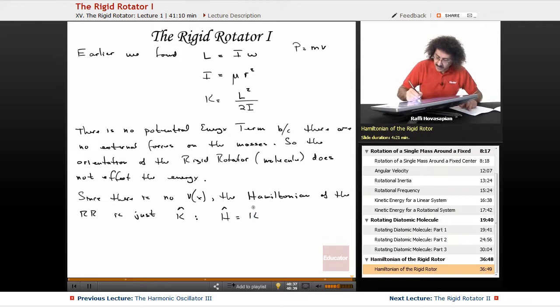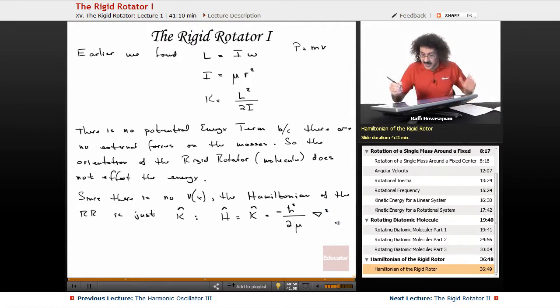So we have the Hamiltonian is the kinetic energy operator, which is going to equal, remember, minus ℏ² over 2m, but now it's twice the reduced mass, and then of course, ∇². That's it.